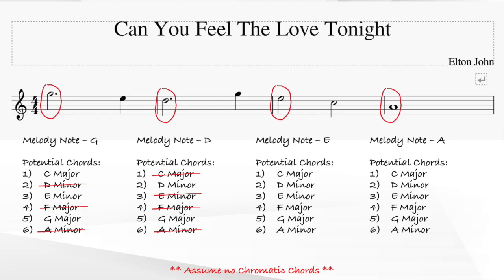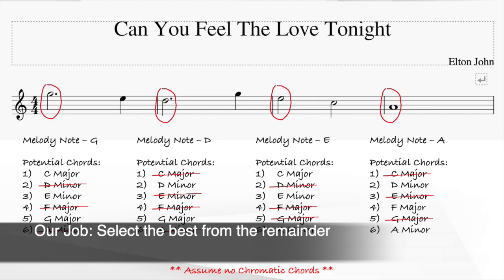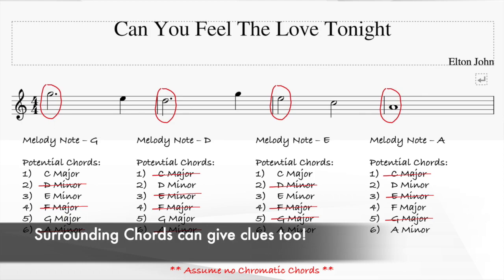For the third melody note E, C major, E minor, and A minor are more likely correct, and for the fourth melody note A, D minor, F major, and A minor are more likely correct. We've narrowed down our choices from 6 chords per bar to 2 or 3 chords per bar, reducing from a total of 1,296 possibilities to 54 possibilities. In addition to the melody note, we can also use our knowledge of common chord progressions and the surrounding chords to make a good guess of what the correct chords are.